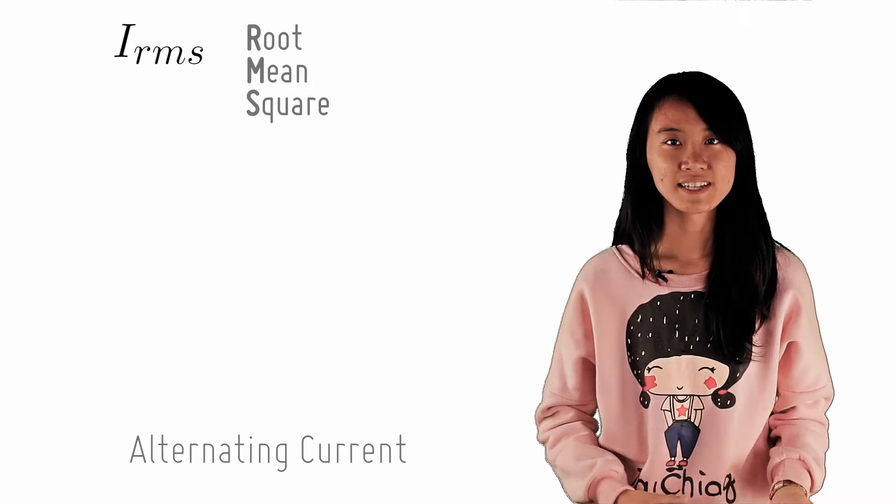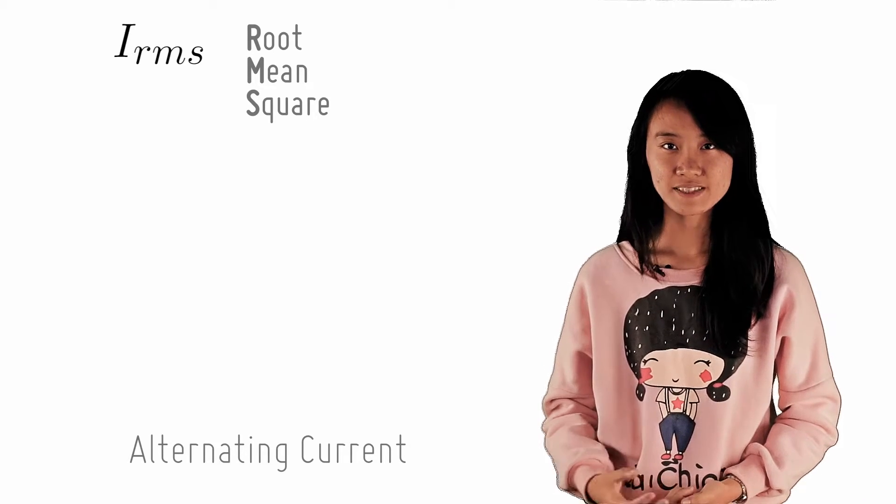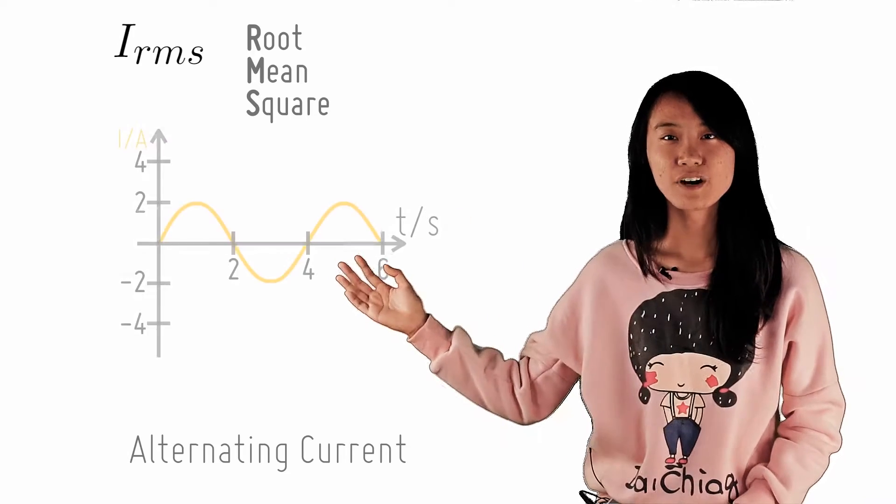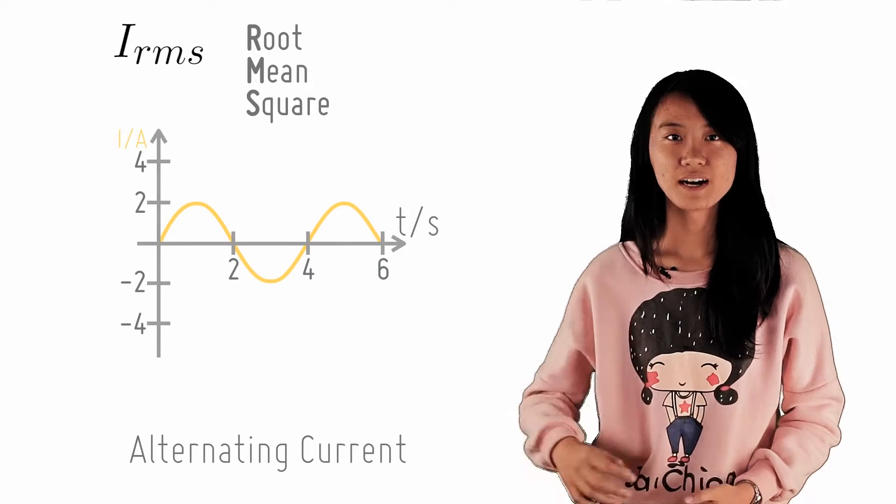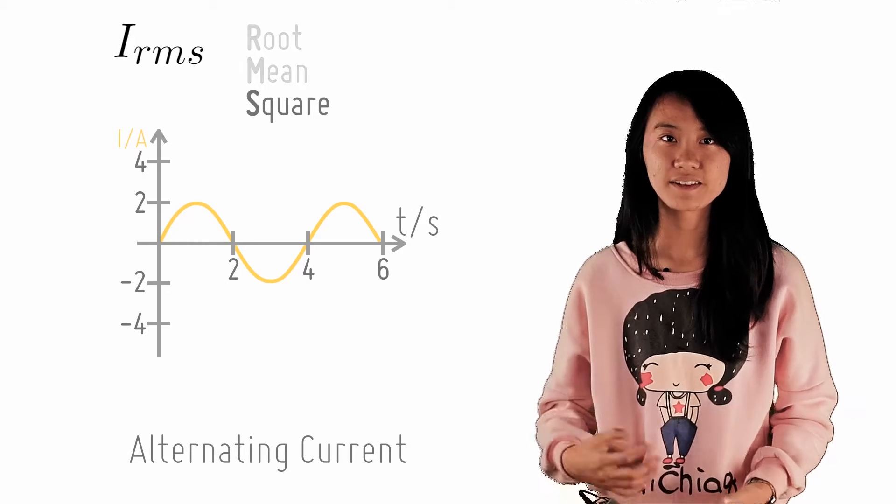Confused? Before we explain why this gives the average power, let me demonstrate how you can find the root mean square current of an AC circuit. From the graph of the current, to obtain the RMS current, you apply the operations in the opposite order: first square, then mean, then root.